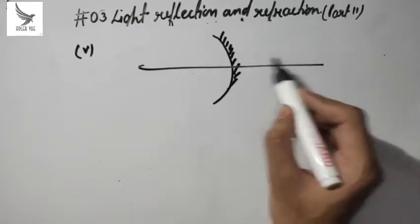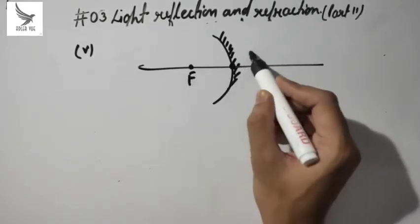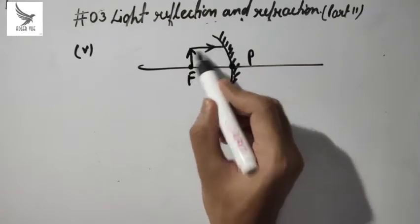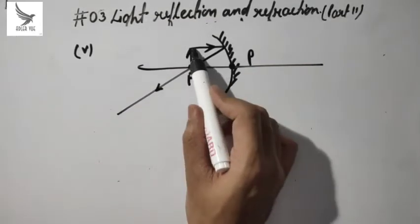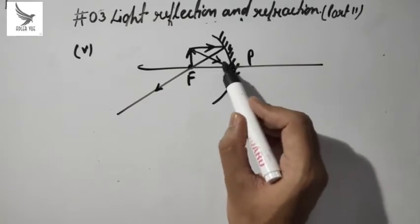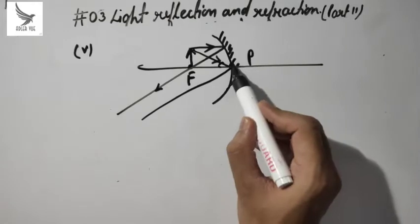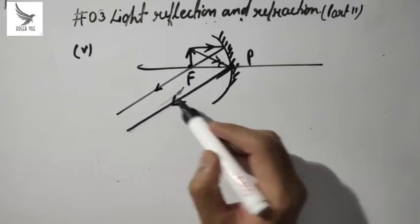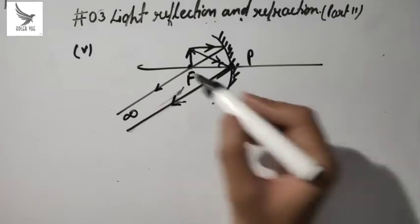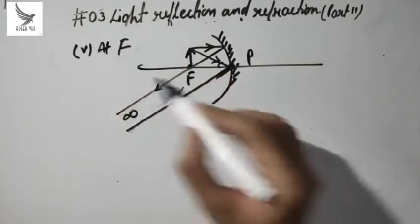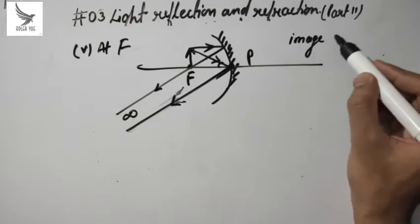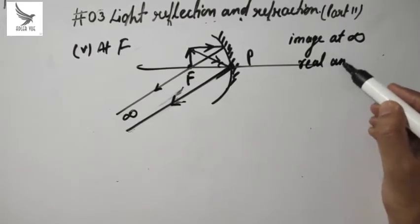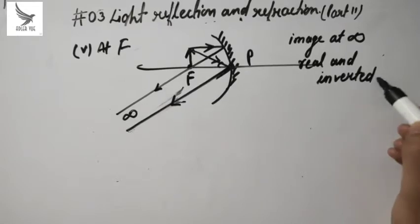In a concave mirror, we are going to keep the object at F. So if we keep the object at F, one light ray will go parallel to the principal axis. Parallel rays after reflection will meet at infinity. So if we place the object at F, the image will be formed at infinity. And the image will be real and inverted.